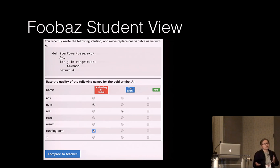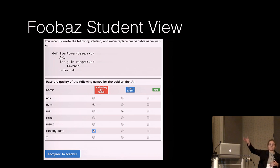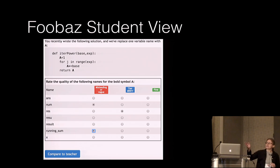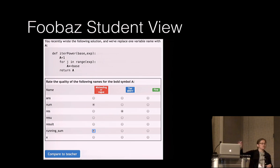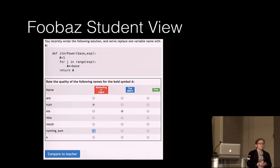On the student side, we take their code, execute it on the same test case, blank out one variable name, and students try to evaluate each alternative for that placeholder. When they hit submit, they see whether they agree or disagree with the teacher and any comments the teacher left.